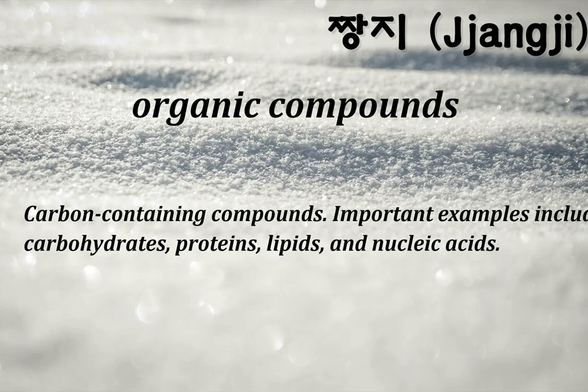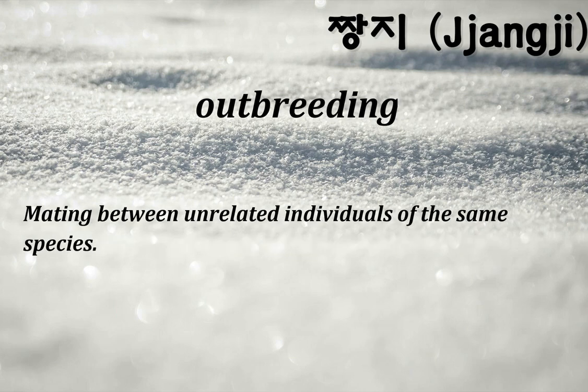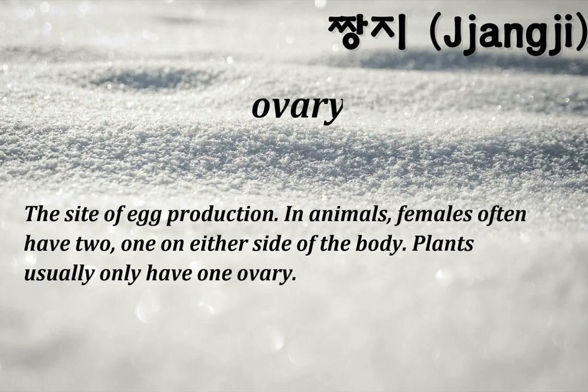Organic compounds: carbon-containing compounds; important examples include carbohydrates, proteins, lipids, and nucleic acids. Outbreeding: mating between unrelated individuals of the same species. Ovary: the site of egg production; in animals, females often have two — one on either side of the body; plants usually only have one ovary.